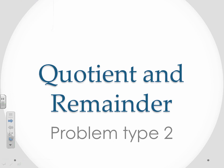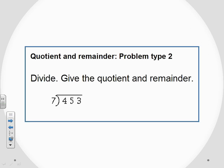Okay, now we're going to take a look at quotient and remainder problem type number two. We're asked to divide and to give the quotient and the remainder, so keep in mind we're going to have to give two answers: what the quotient is and what the remainder is. We have set up here seven goes into 453, and it's already set up long division. I'm just going to write a little bit larger out here: seven goes into 453.